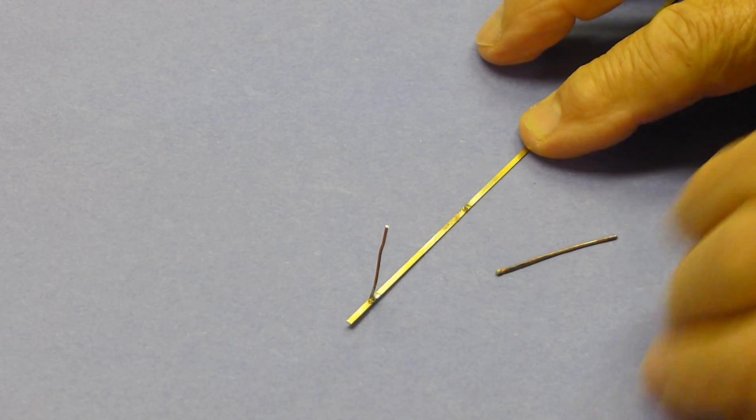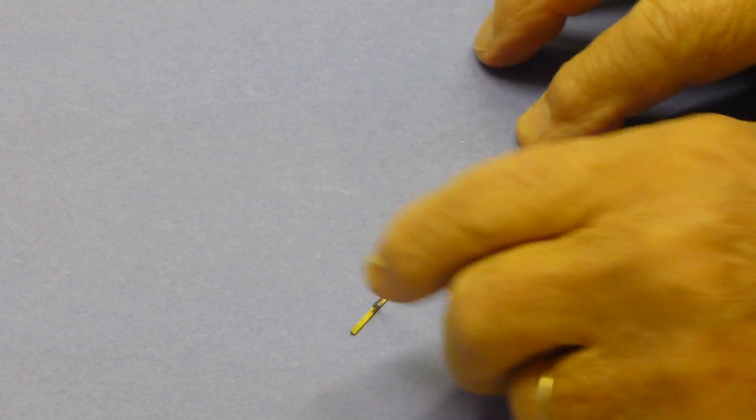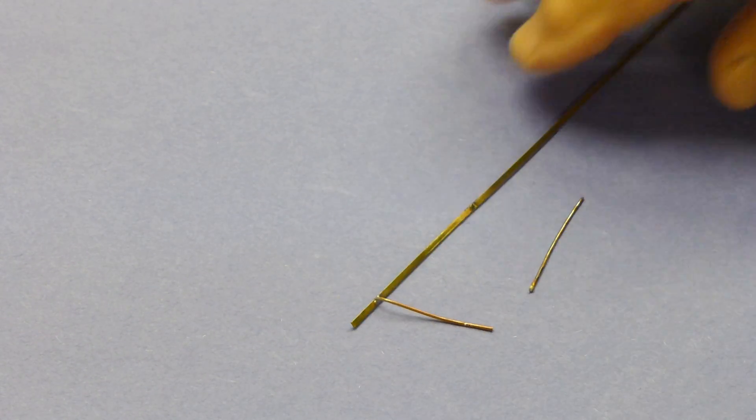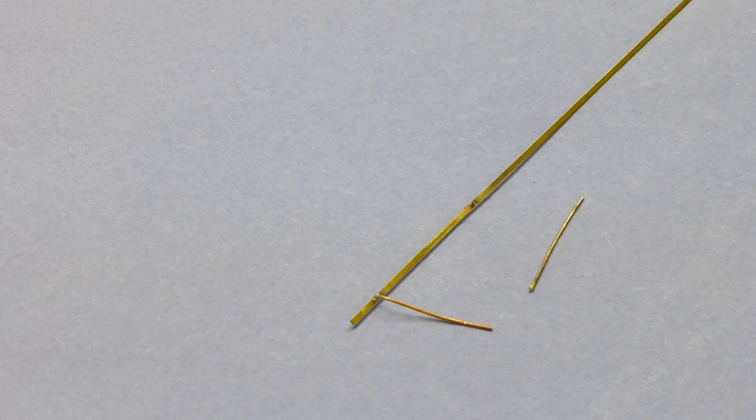This is the regular solder, and then this is the silver solder or silver braised piece. And you can see, that was it.